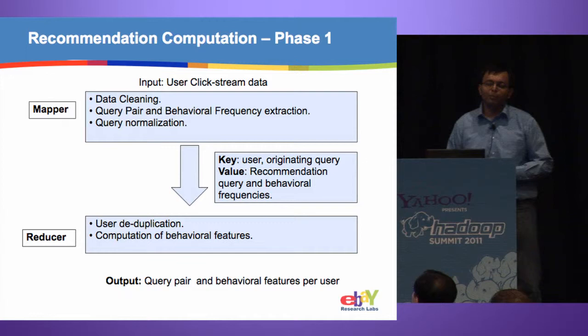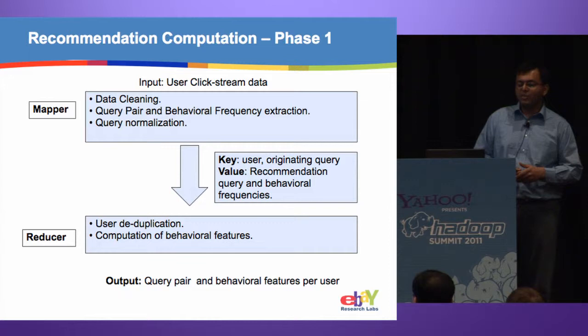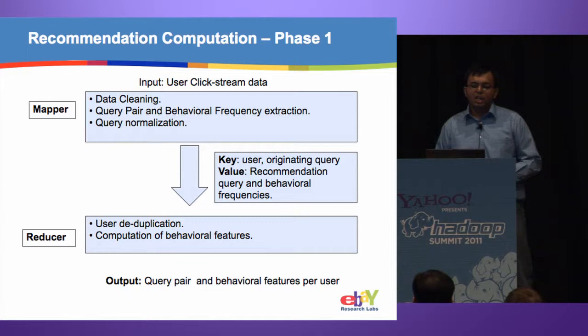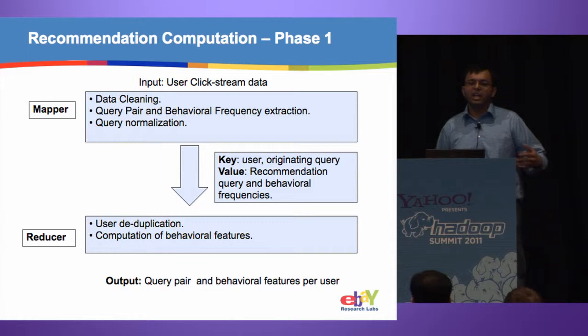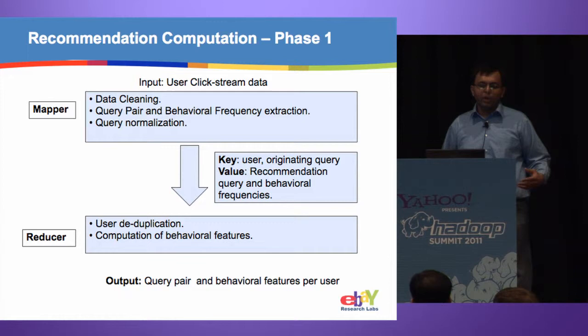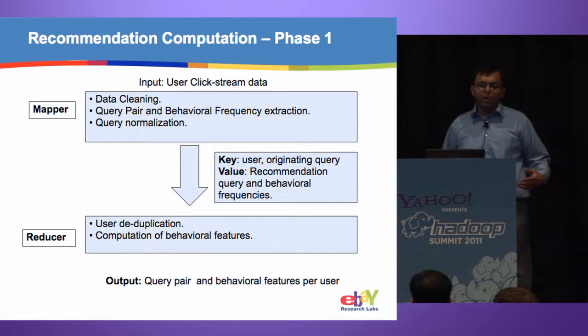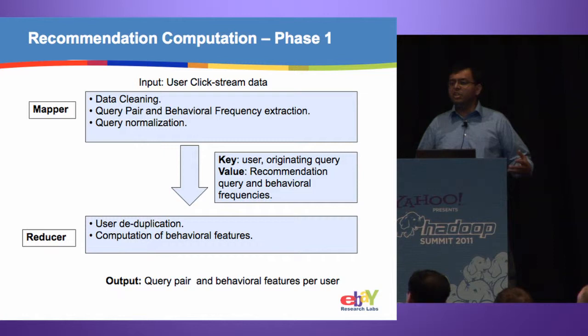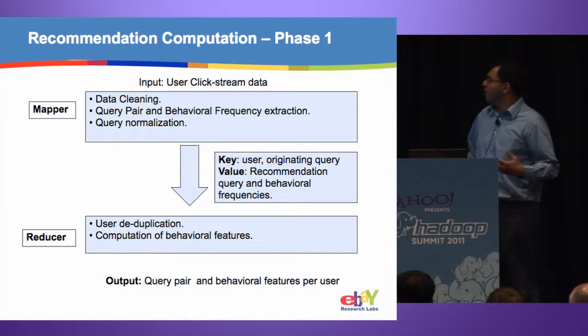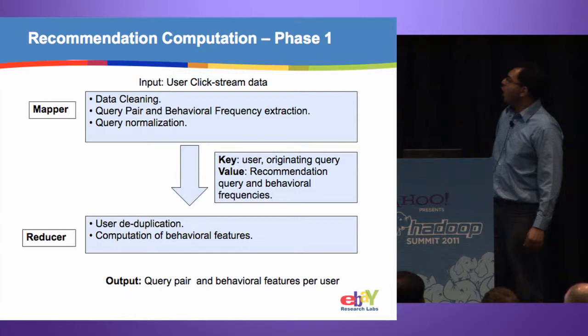Another important point is data preparation. The way we prepare data for downstream processing can affect computation time significantly. Since we look at user sessions, we need to group all activity in a session together — forming sessions from events is not trivial, involving session stitching, gathering events for a single session, and session expiry. So we preprocess all data, gather user sessions, and store them on HDFS, which saves a lot of computation time downstream.